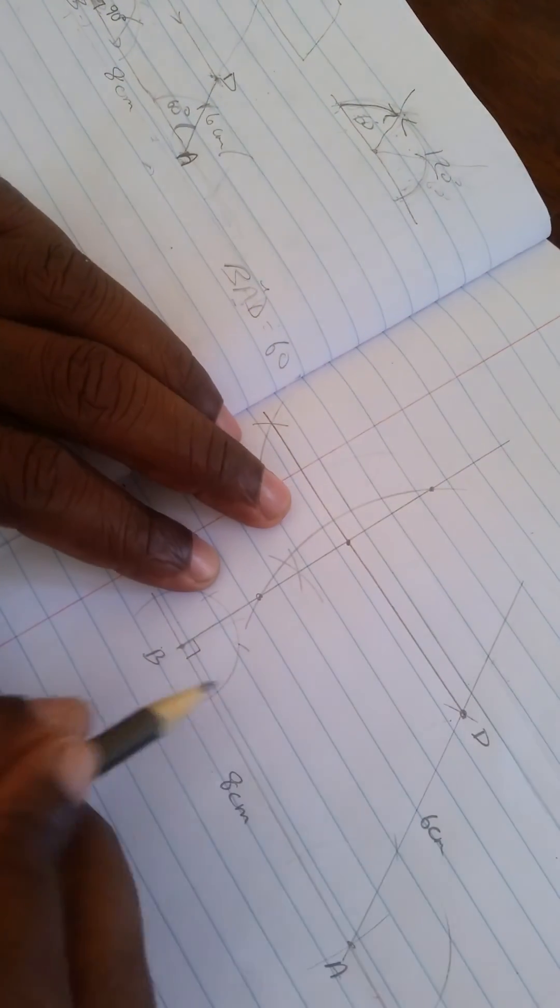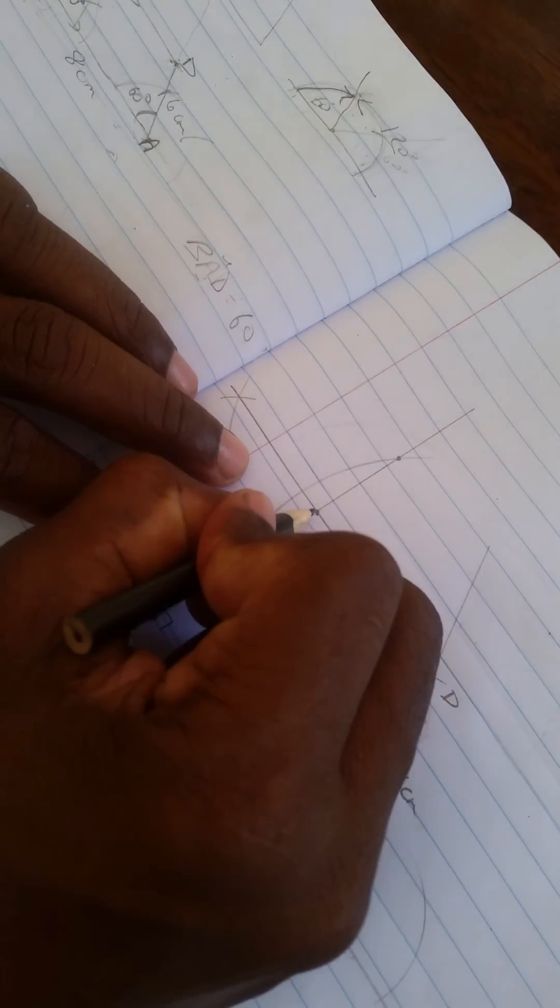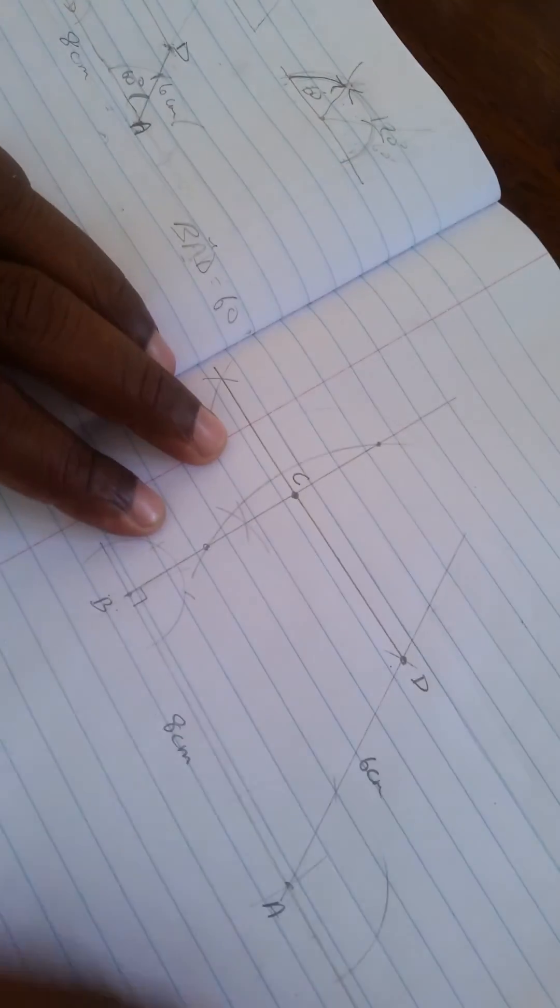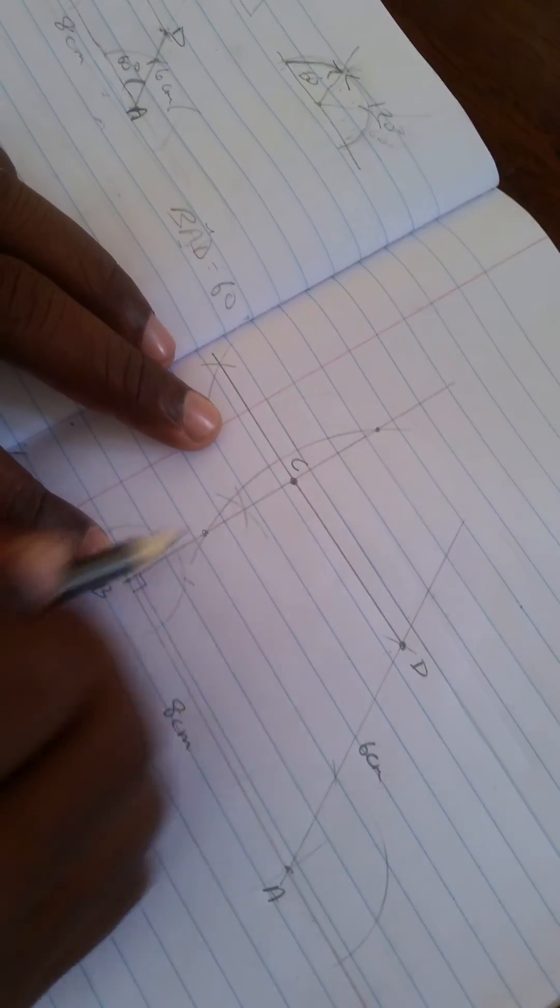Okay? So that's gonna be the point C. So we have A, B, and this will be C, and this is D. So that's the trapezium. Trapezium ABCD.